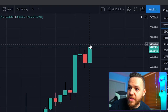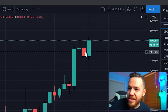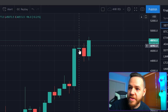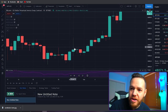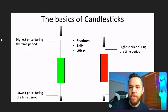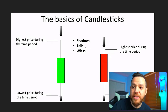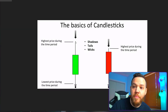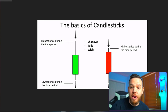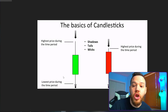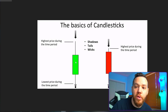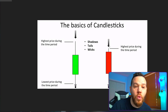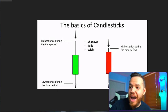Now you're probably wondering: what are these little skinny lines? Why are some candles fat and this one is just skinny with long lines on both sides? Why does this one have a super long line up top and a short line on the bottom? These are all questions we ask the first time we look at these charts. These lines are also known as shadows, tails, and wicks. The top line represents the highest price during the time period, and the bottom line represents the lowest price during the time period.